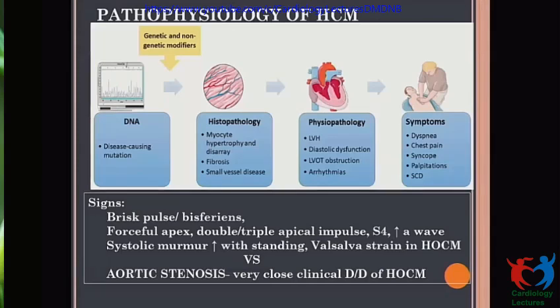Looking at the pathophysiology of HCM: due to disease in sarcomeric proteins and non-genetic modifiers, there is myocyte hypertrophy and disarray. This leads to fibrosis and small vessel remodeling, resulting in small infarcts and further fibrosis. The result is LVH, diastolic dysfunction, LVOT obstruction due to a thick septum, and various forms of arrhythmias. All these combine to produce symptoms like dyspnea, which may result in heart failure, chest pain, syncope, palpitation, and sudden cardiac death.